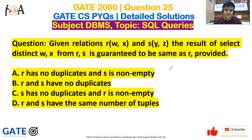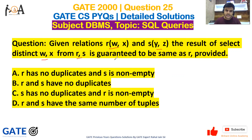Hey guys, a very warm welcome to Rehunt Online Academy. The question here is from GATE 2000, question number 25, from the DBMS topic on SQL queries. It is a very important question. Given relations R(W, X) and S(Y, Z), the result of the query SELECT DISTINCT W, X FROM R, S is guaranteed to be the same as R provided — what condition?